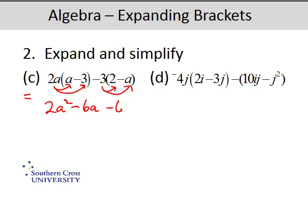3 times 2 is 6. Negative times negatives are positive. That's the one you're most likely going to make a mistake on. And 3 times a is 3a.